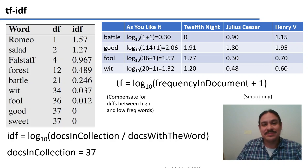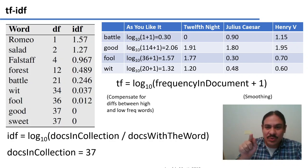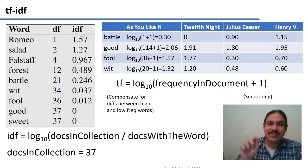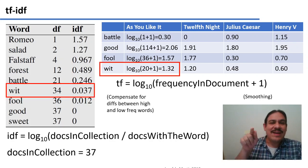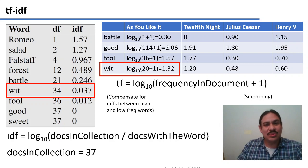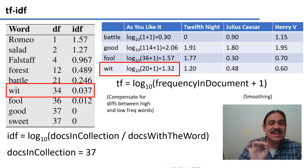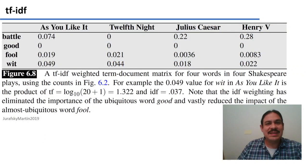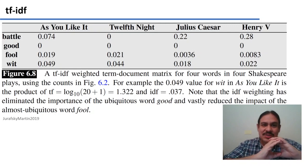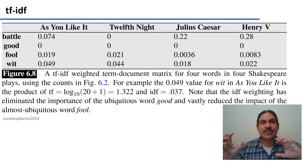The term frequency number is the base-10 logarithm of the frequency of each word within the document — for example, how many times we see 'battle' in Julius Caesar — plus one. Then we multiply the TF and IDF values together. For example, the TF-IDF number for 'wit' in As You Like It is the document frequency value 1.32 multiplied by the collection frequency value 0.037, giving us 0.049. This is a measurement of frequency that takes into account both the local frequency in each document and the global frequency across the entire collection.